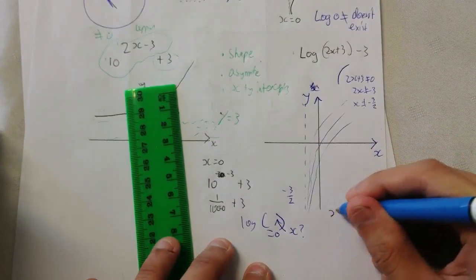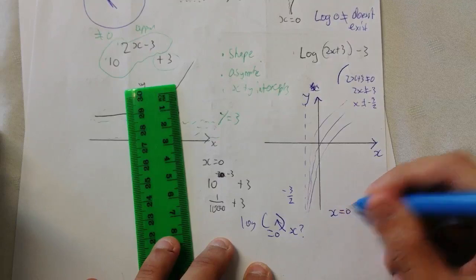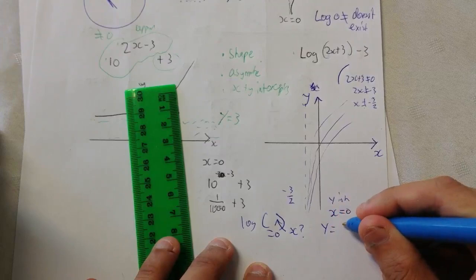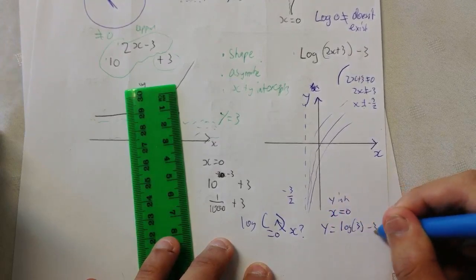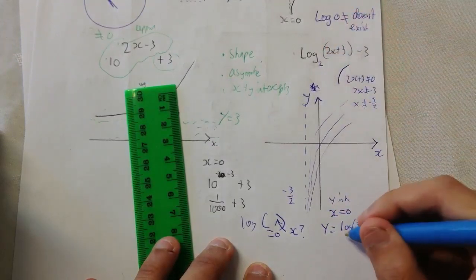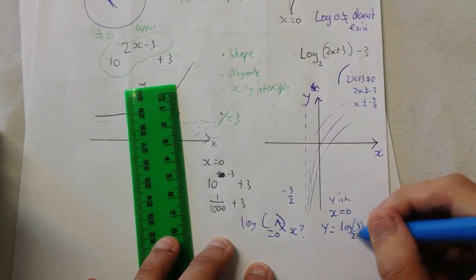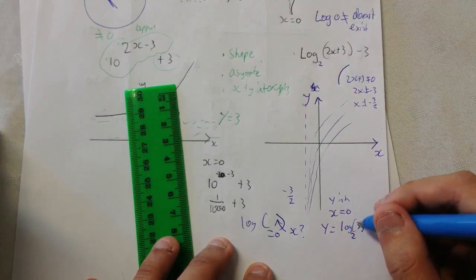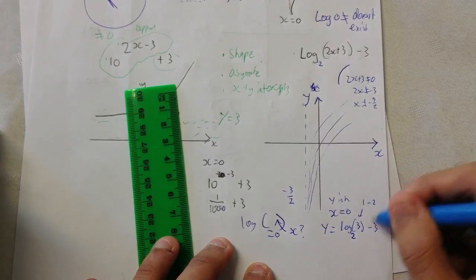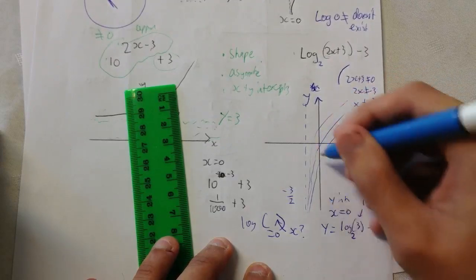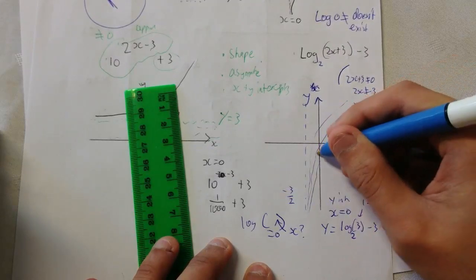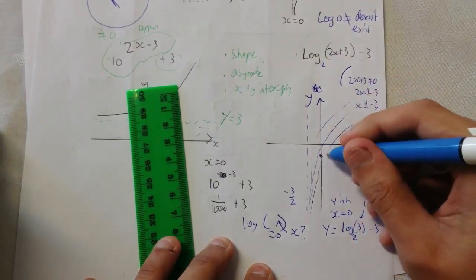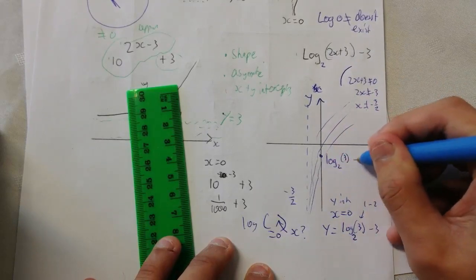So, x intercept the easy one. I mean the y intercept is the easy one. Y intercept. This is when x equals zero, you get y equals log of 3 minus 3. I'll tell you what the base was, so let's make it 2. And this is 2 to the power of what equals 3. It's less than 2 to the power of something equals 4. So, this is about between 1 and 2. So, this is going to be negative. So, the y intercept is going to be like over here somewhere. Good. So, we can't simplify that, so we just write log 2 of 3 minus 3.